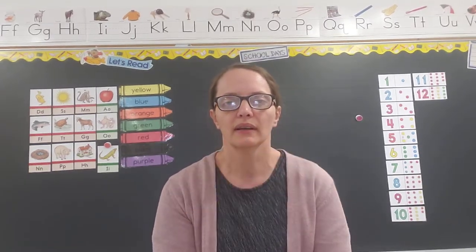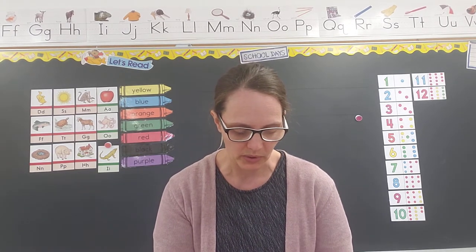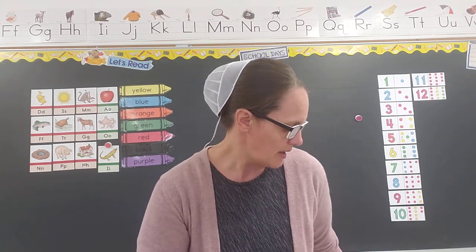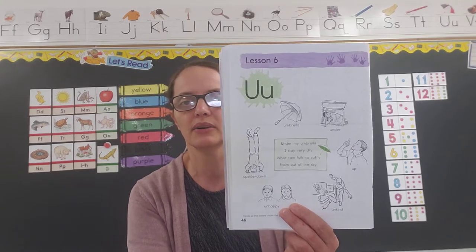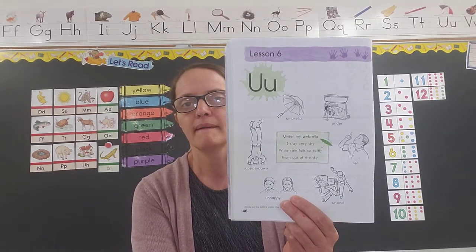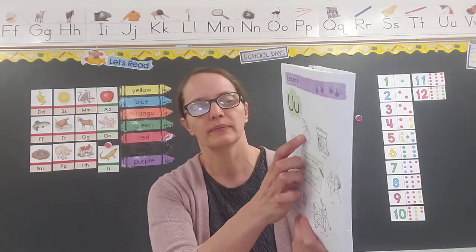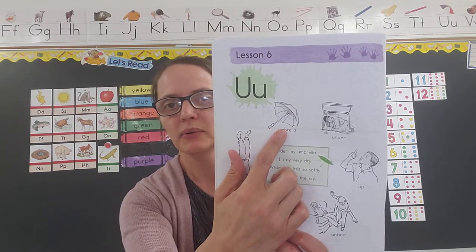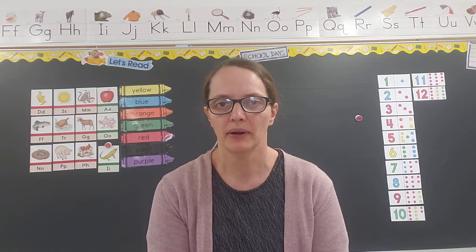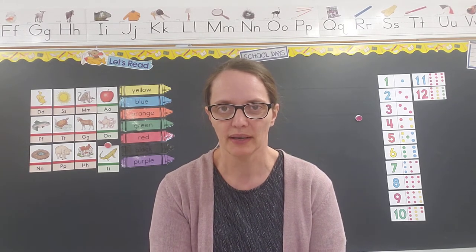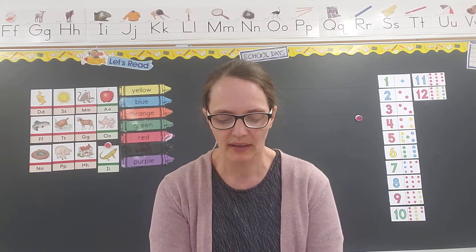Now what are some words that you can think of that start with the U sound? There's not a whole bunch of words but there's a few. Let's start on our page and we'll probably learn some of those. Is everybody ready to start on this page? Let's start at the top. The first picture right here — everybody know what that is? It keeps the rain off of us: umbrella! Let's say it together, are you ready? Umbrella. Hear that U sound at the beginning.